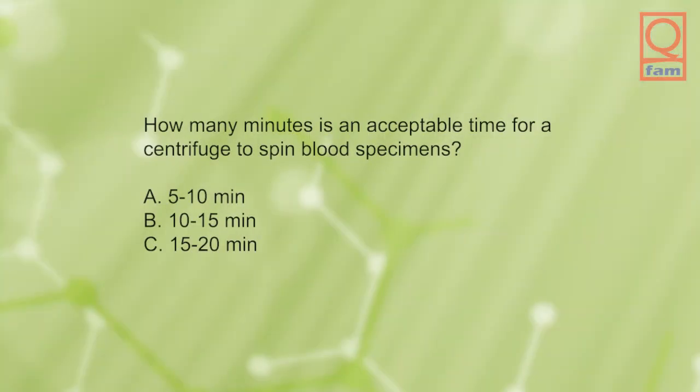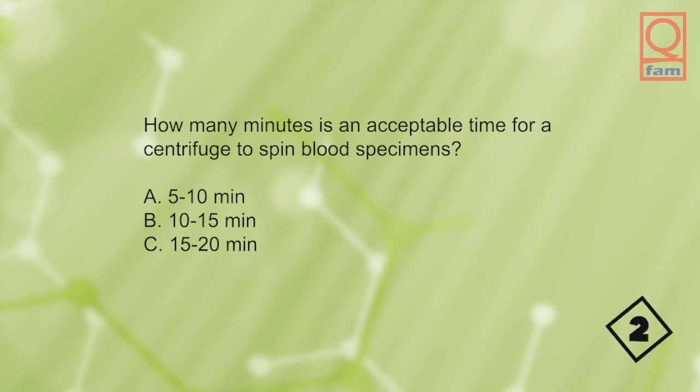How many minutes is an acceptable time for a centrifuge to spin blood specimens? A) 5 to 10 minutes, B) 10 to 15 minutes, C) 15 to 20 minutes. The answer is B, 10 to 15 minutes.